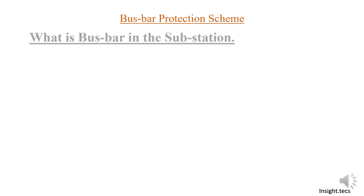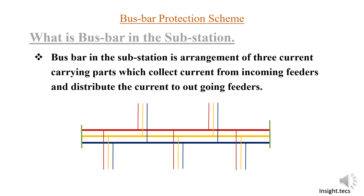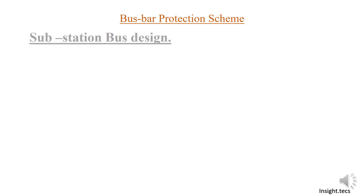What we have seen up till now is a single line diagram of a bus bar, but in an actual substation you will find the bus bar arrangement something like this — R, Y, and B phase, similarly R, Y, and B phase for either a transformer or a feeder. Like this you will see a single bus arrangement.